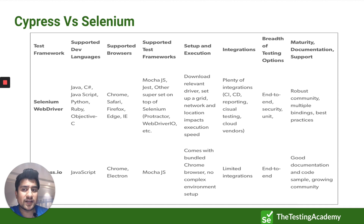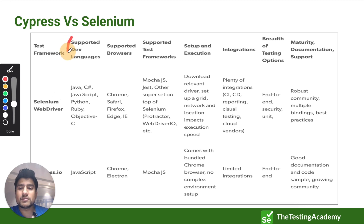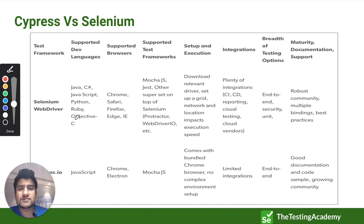This is the most important slide — it covers the major differences between Selenium and Cypress. Starting with supported languages: most people already know that Selenium supports a variety of languages like Java, C#, JavaScript, Python, Ruby, and Objective-C. Cypress, on the other hand, only supports JavaScript as of now.